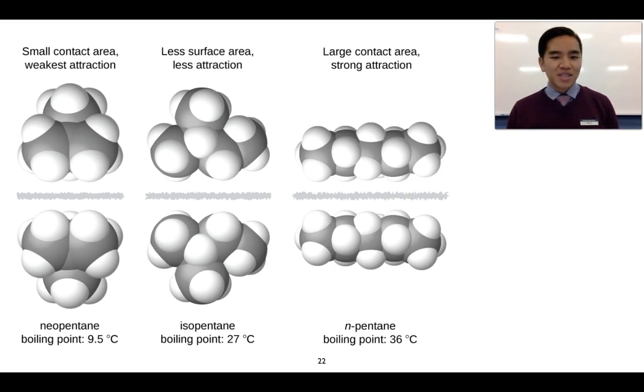So this represents three different molecules that all have exactly the same mass. However, in this case, n-pentane over to the right has the greatest contact area between its molecules, and as a result, has the greatest boiling point out of the three.